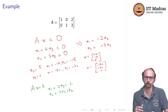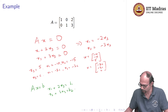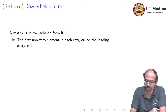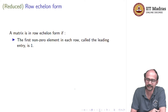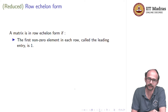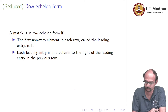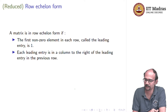Matrices of this form have a particular name — this is called the row echelon form, and that is what we are going to study in this video. A matrix is said to be in row echelon form if the first nonzero element in each row, called the leading entry, is 1. For each nonzero row, the first nonzero element from the left must be 1.